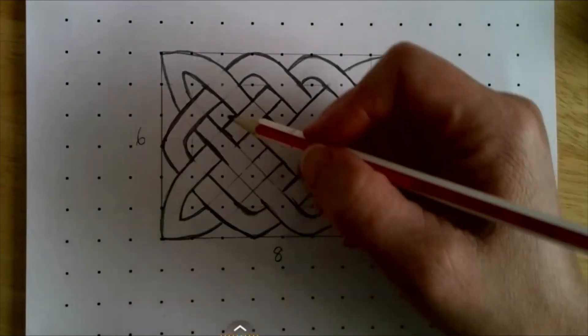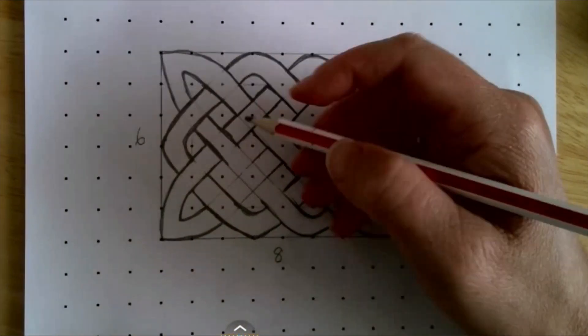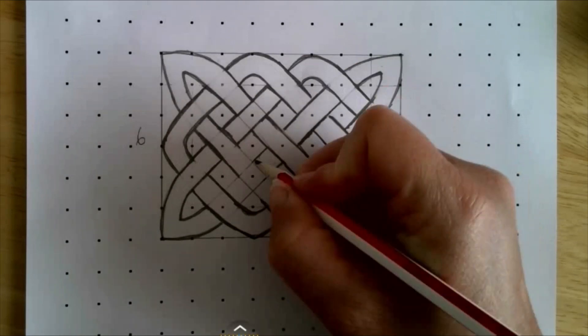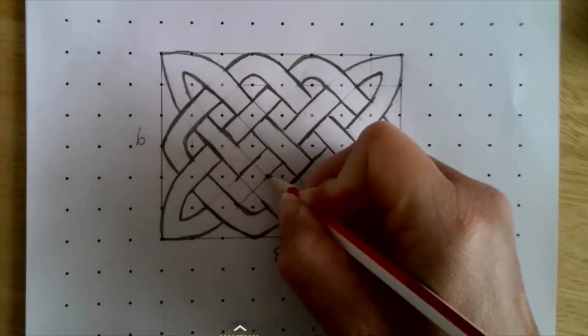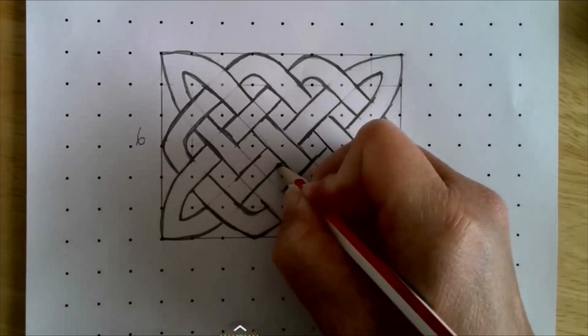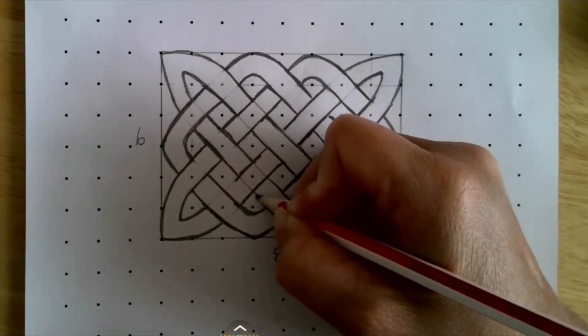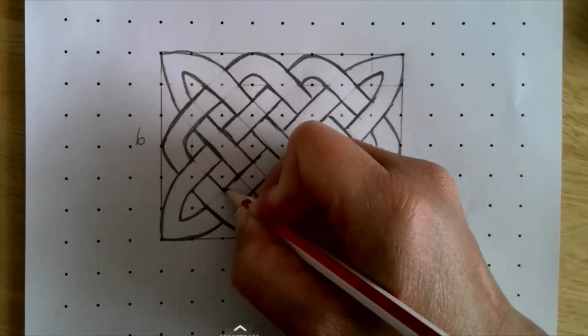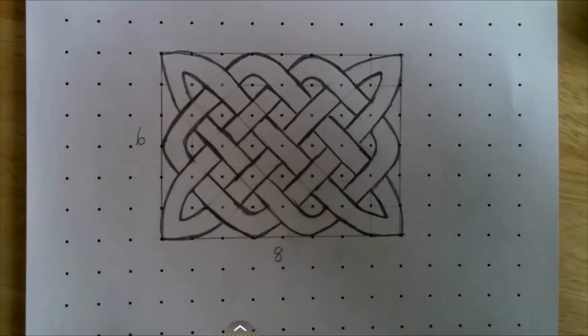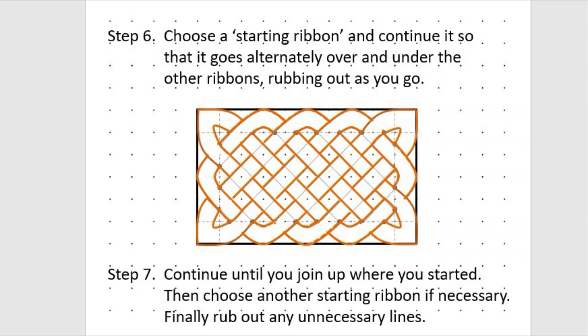Now I'm just finishing off my last ribbon, so I'm going over, and then I'm going to go under. Step seven is continue until you join up where you've started. Then choose another starting ribbon if necessary. Finally, rub out all unnecessary lines.